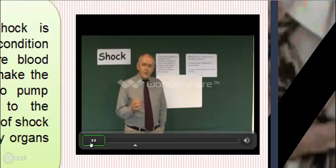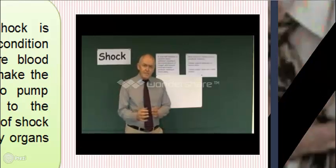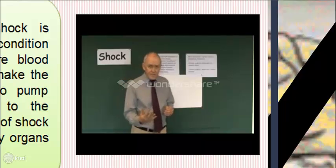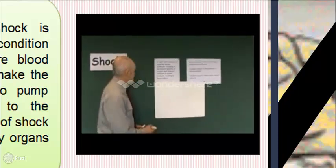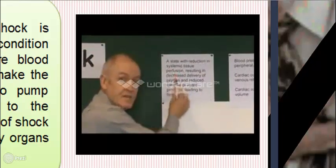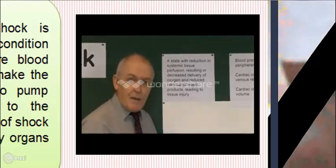When we're talking about shock, we're talking about a state of reduced tissue perfusion. Shock is about circulatory failure — the circulatory system is no longer functioning as it should. What we have here is a definition of shock: it is a clinical state with reduction in systemic tissue perfusion. Systemic means the tissues of the body, so there is a reduced amount of blood going through all of the body tissues.